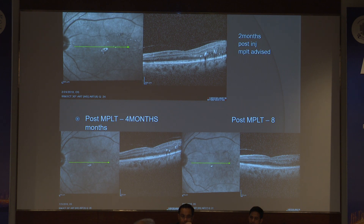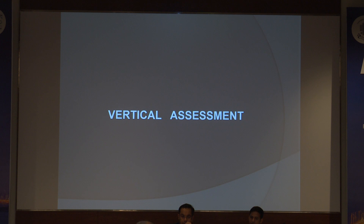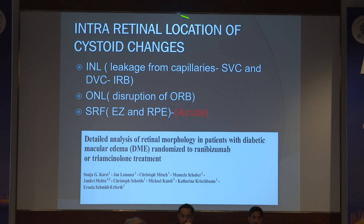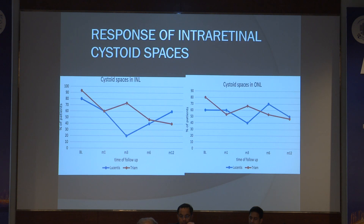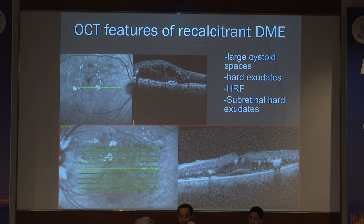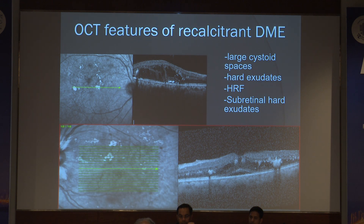The intraretinal location of cystoid spaces: INL cysts are due to leakage from capillaries, ONL is due to disruption of the outer blood-retinal barrier, and SRF relates to EZ and RPE disruption. OCT features of recalcitrant diabetic macular edema include large cystoid spaces, hard exudates, hyperreflective foci, and subretinal hard exudates. These are associated with the worst visual prognosis in patients who have recalcitrant diabetic macular edema.